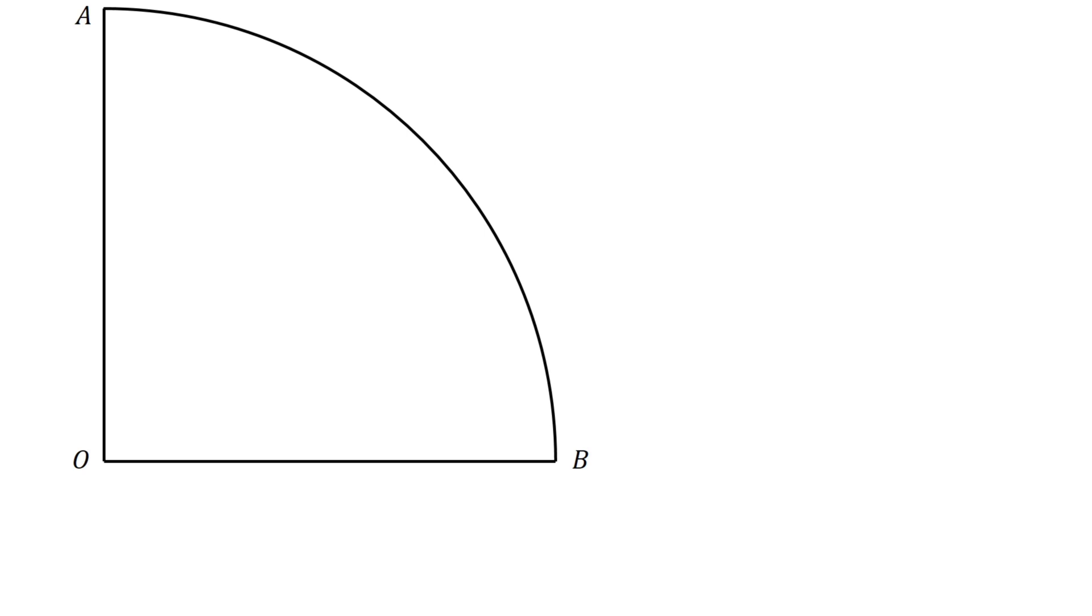Given the quarter circle AOB, construct a semicircle with OB as the diameter. Let X and Y be points on the semicircle such that arc YB equals 2 times arc XY.